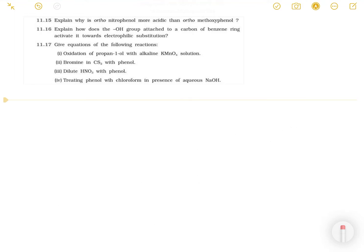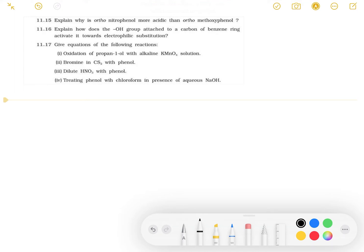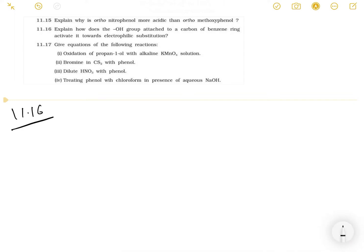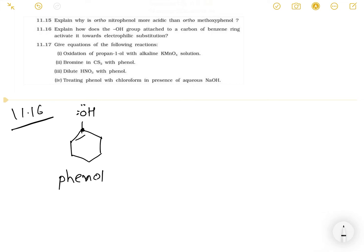Now question 11.16 states: explain how does the OH group attached to the carbon of the benzene ring activate it towards electrophilic substitution. In benzene, oxygen is directly present and has a lone pair of electrons. This oxygen donates its lone pair of electrons to the benzene ring, which causes the electron density of the benzene ring to increase.